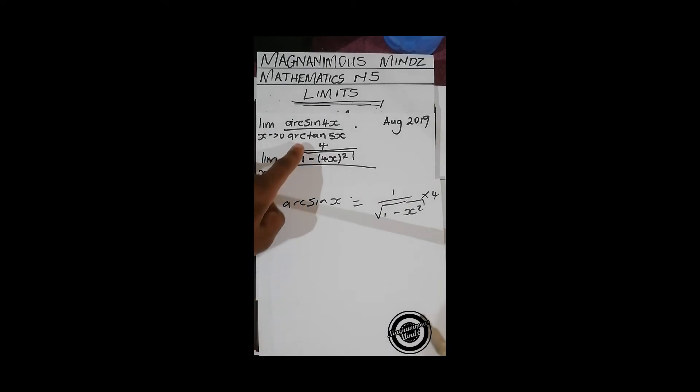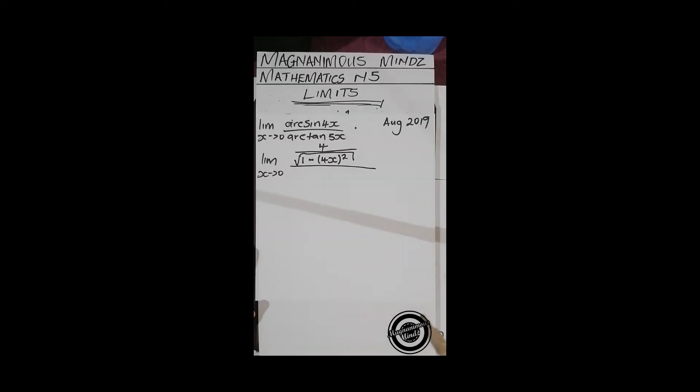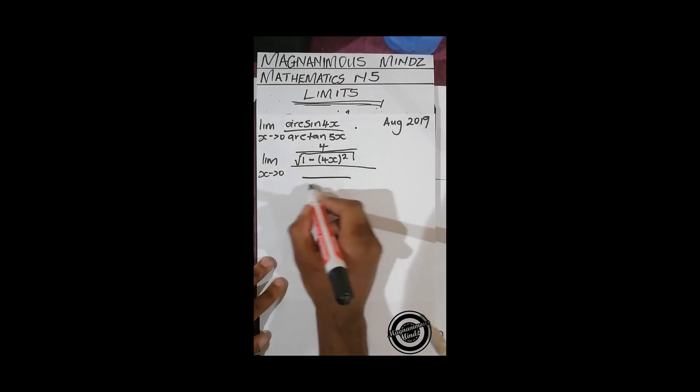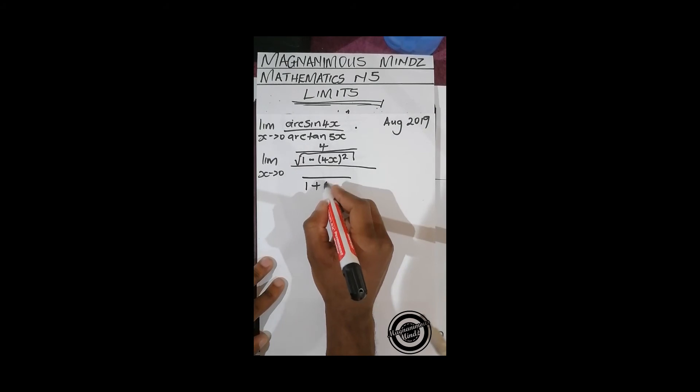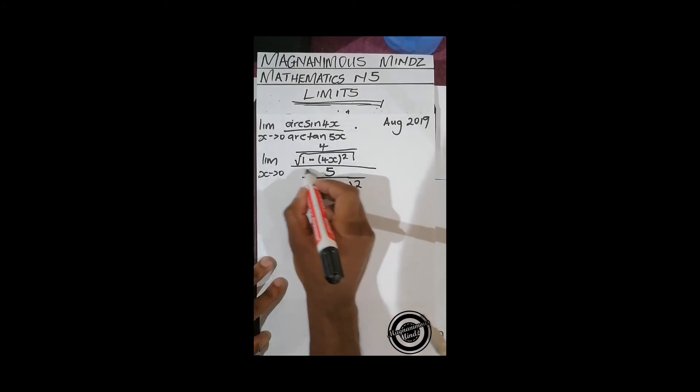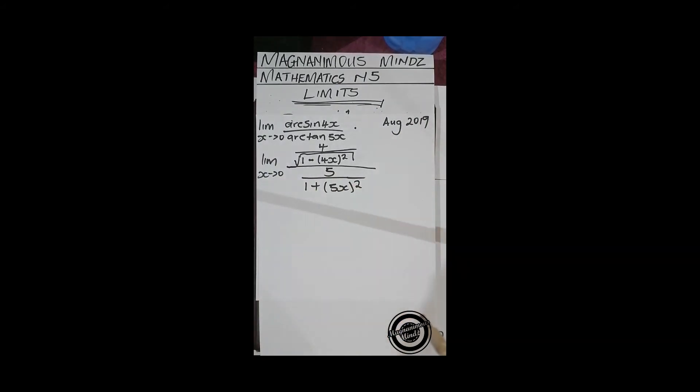We're also going to do the same thing with arctan 5x. So for arctan 5x, we're going to get 1 plus 5x all squared, and on top we're going to have 5.